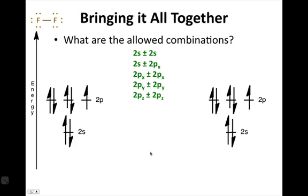And then the homoorbital combinations between the p orbitals, so the px with itself, the py with itself, and the pz with itself, are all allowed.